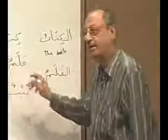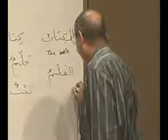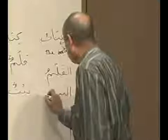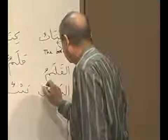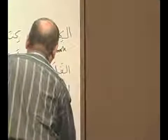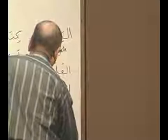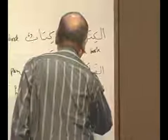Because tanwin and 'al' cannot co-exist. One has to come and the other has to go. So if you say 'al', then only one dhamma. And here comes al baitu — instead of baitun, it became al baitu, meaning 'the house'. And I should write here 'the pen'.